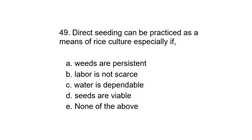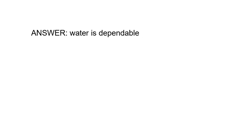Question 49. Direct seeding can be practiced as a means of rice culture especially if: A. Weeds are persistent, B. Labor is not scarce, C. Water is dependable, D. Seeds are viable, or E. None of the above. Correct answer is water is dependable.